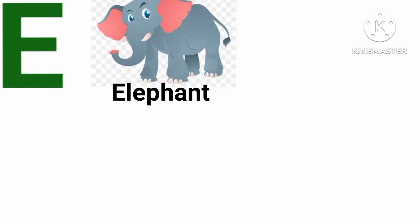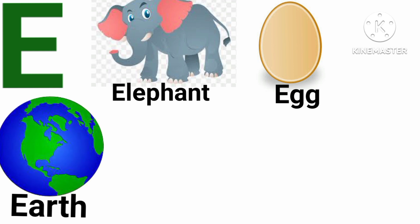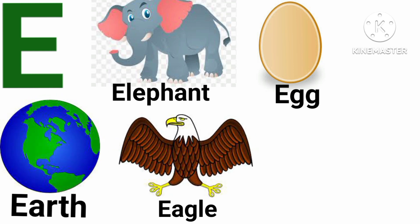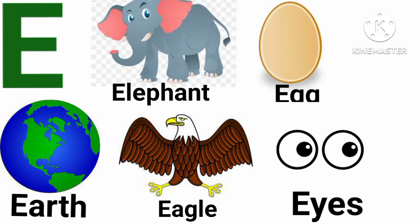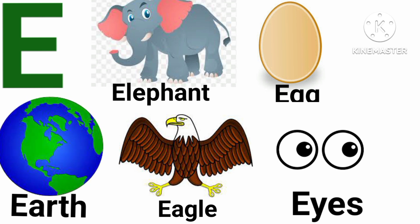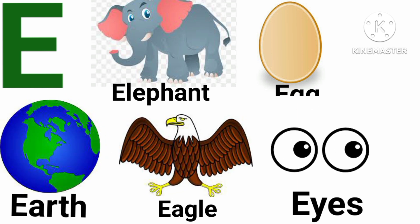E for elephant. E for egg. E for earth. E for eagle. E for ice. Let us repeat these words. Elephant. Egg. Earth. Eagle. Ice.